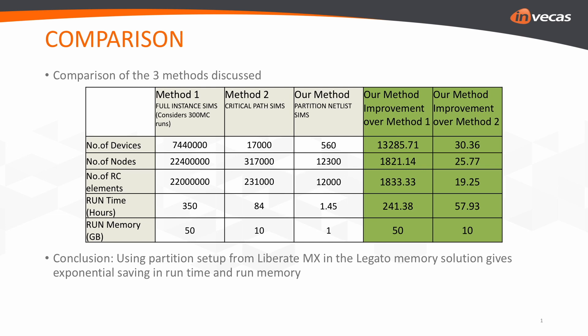The second method — critical path modeling simulation — has a netlist size of order of several thousands, and RC elements also in the several thousands. Even that Monte Carlo simulation takes around 84 hours, around three to four days. Whereas with our approach, using LiberateMX partition netlist and running Monte Carlo simulation, the device count drastically reduces from order of millions to just a few hundreds. The RC netlist also goes from several millions down to a couple of hundred transistors and RC elements. As the netlist and device count come down, you see exponential savings in runtime and memory.